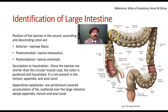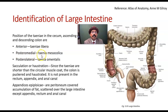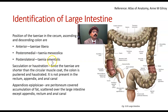But in the case of the transverse colon, taenia libera becomes the anterior taenia. The posteromedial taenia mesocolica will be posterior, and taenia omentalis will be in the superior location in the transverse colon.